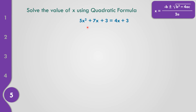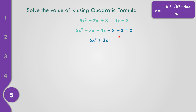Example number 5: 5x squared plus 7x plus 3 equals 4x plus 3. Moving 4x plus 3 to the left side: bring down 5x squared, bring down 7x, positive 4x becomes negative 4x, and 3 minus 3 equals 0. Combining like terms: 5x squared plus 3x equals 0. Since we have no constant, C equals 0. The value of A is 5, B is 3, and C is 0.